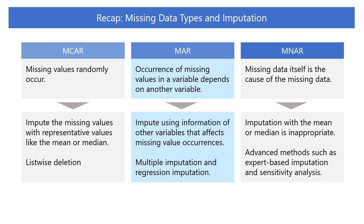In MAR, the occurrence of missing values in one variable is dependent on another variable. Therefore, we can impute missing values using the information of the variable that affects the occurrence of missing values. Specifically, we can use multiple imputation and regression imputation — methods of estimating the actual values of missing values using other observed variables.